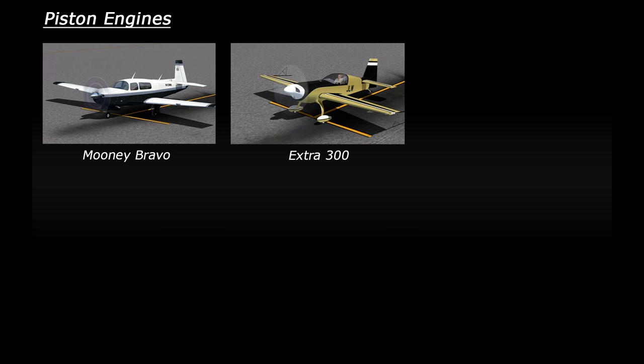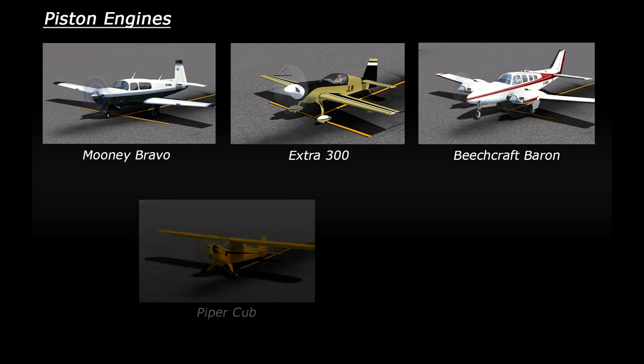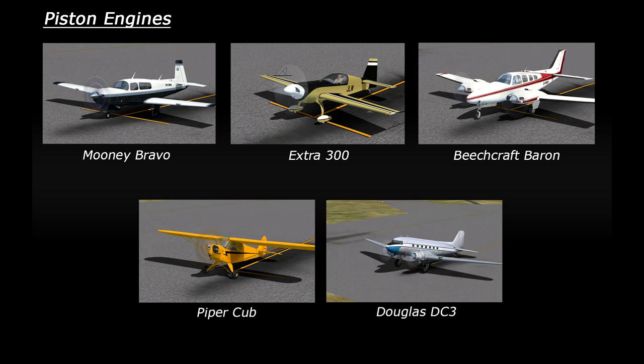The other planes in FSX which have this piston type engine are the Mooney Bravo, the Extra 300 stunt plane, the Beechcraft Baron, the Piper Cub and the Douglas DC-3.